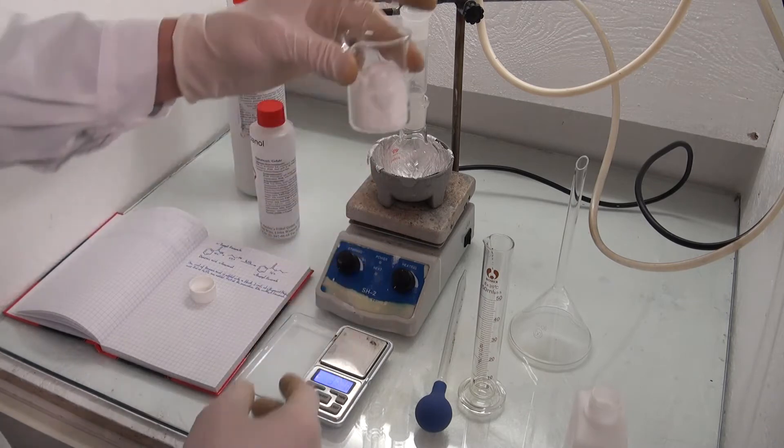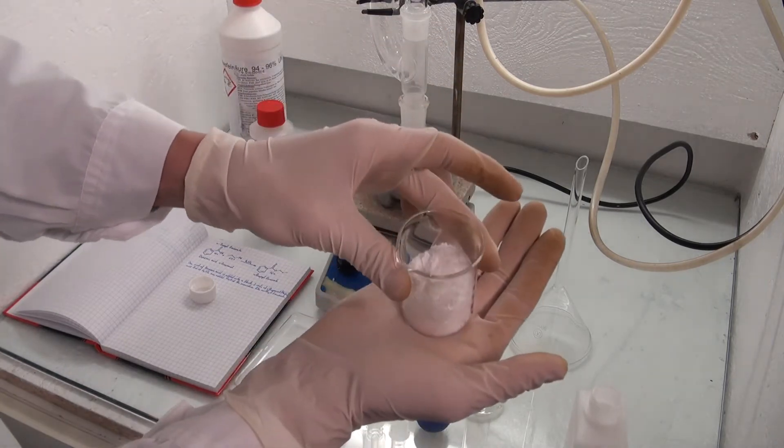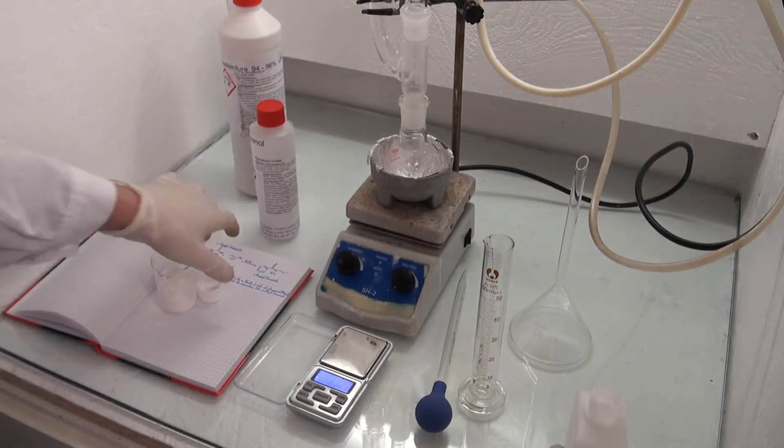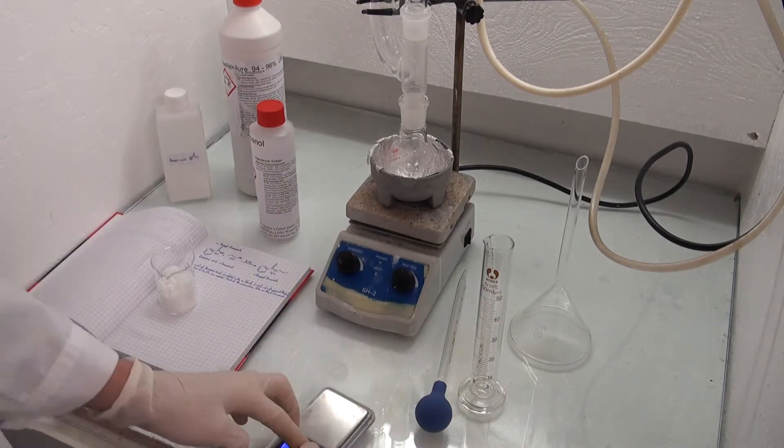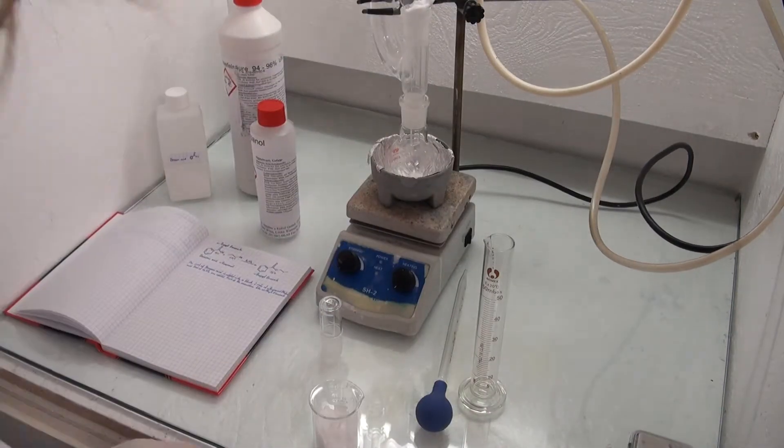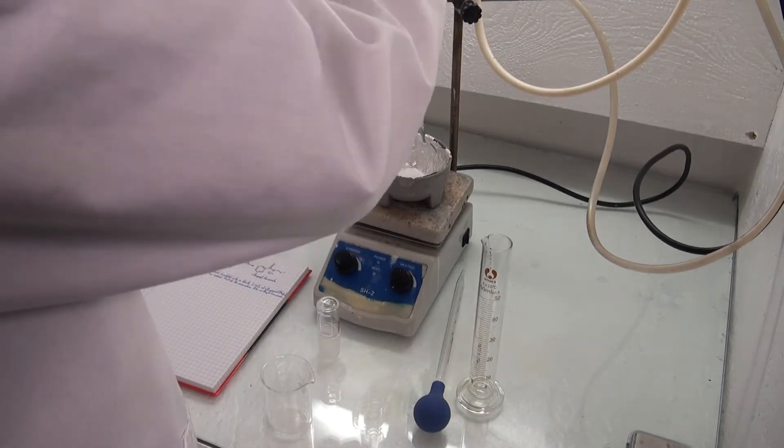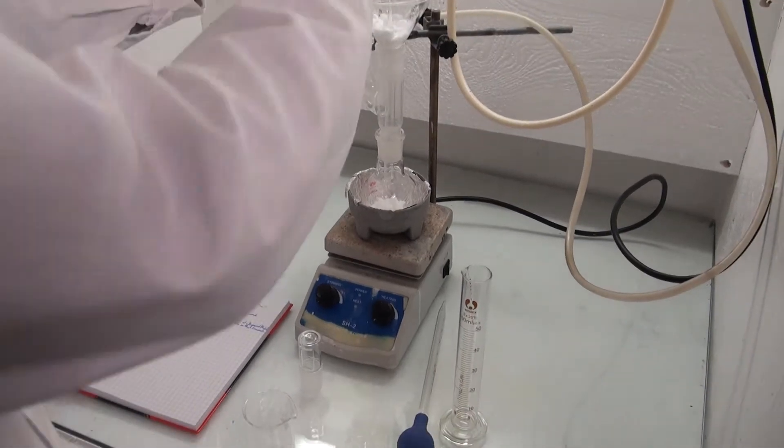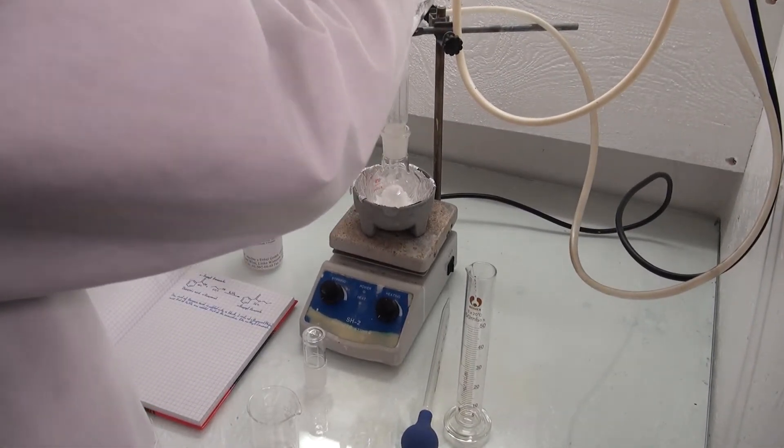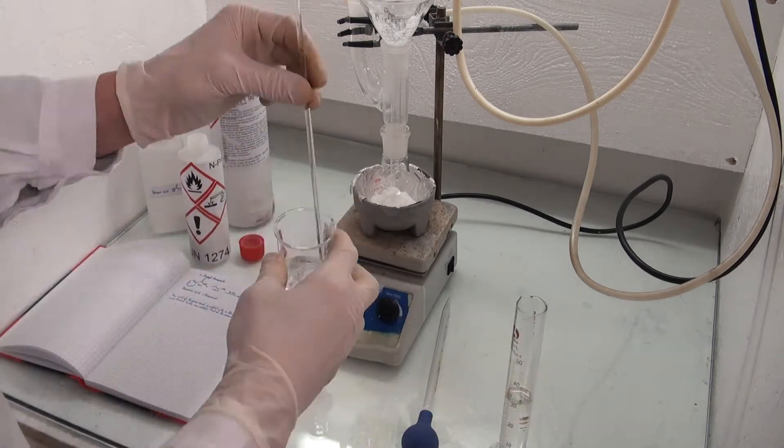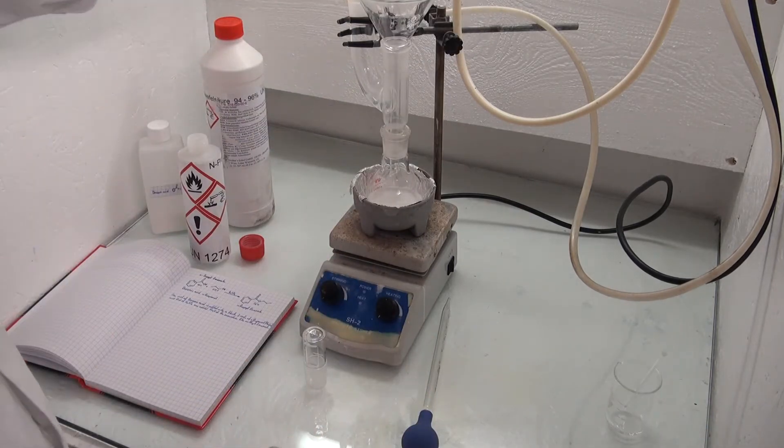The benzoic acid was crystallized from ethanol to give the fluffy pure crystals you see here. Next the N-propanol and a few drops of concentrated sulfuric acid were added.